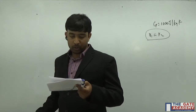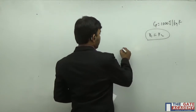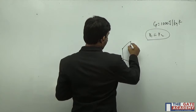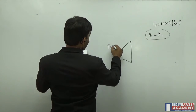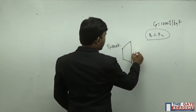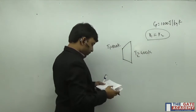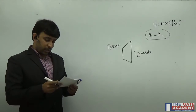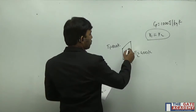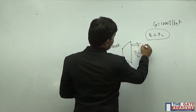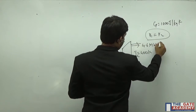The temperatures of the gas at the entry and exit of the turbine are given. Temperature at entry is 1100 Kelvin and temperature at exit is 400 Kelvin. The power produced by the turbine is 4.6 megawatt.